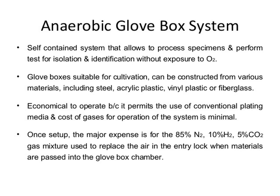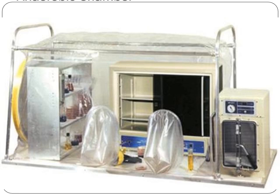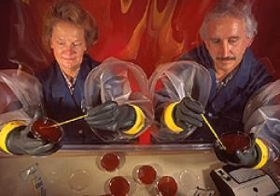The anaerobic glove box is a self-contained system that allows you to process specimens — including inoculating plates — without any exposure to oxygen. Once set up, it is economical to operate. The atmosphere inside uses a mixture of nitrogen, hydrogen, and CO2, which replaces the air when material passes through the airlock.